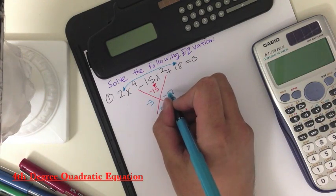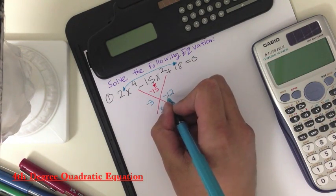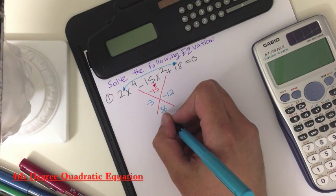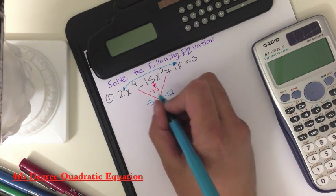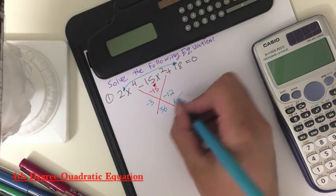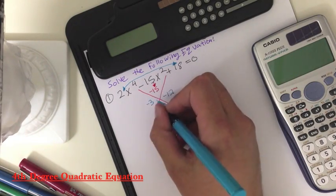That will satisfy both of them because if you multiply negative 3 times negative 12 you will get positive 36. And if you add both of them together you will get negative 15. So this satisfies all our x-factors.